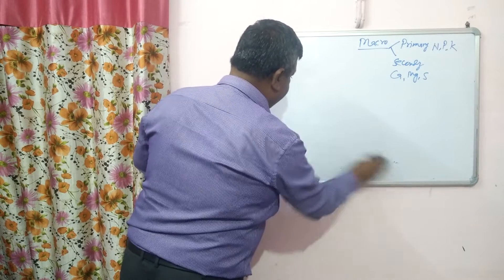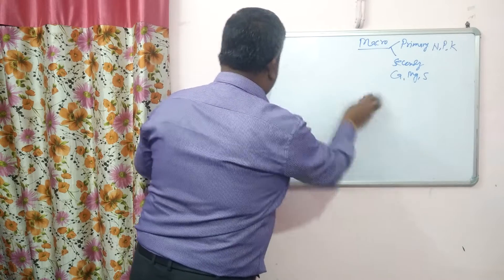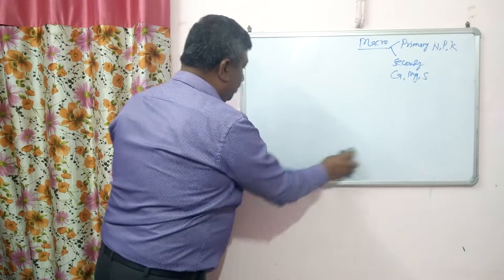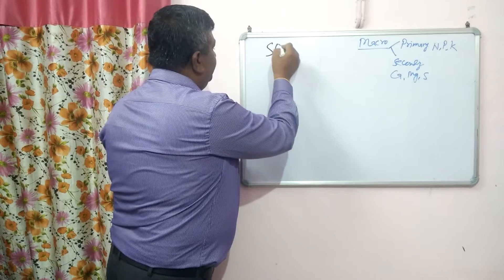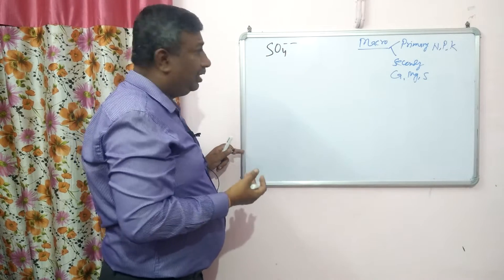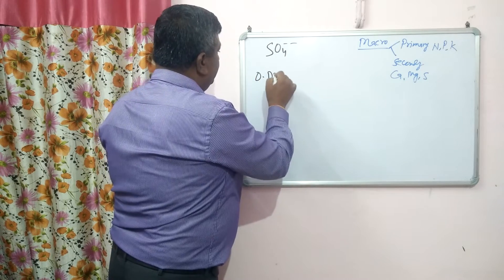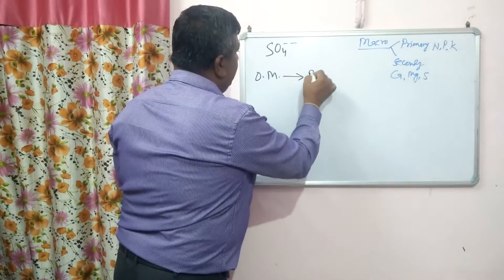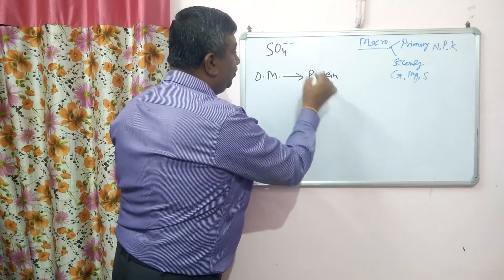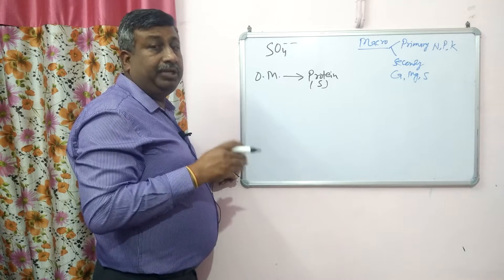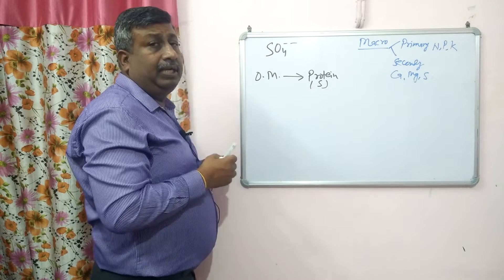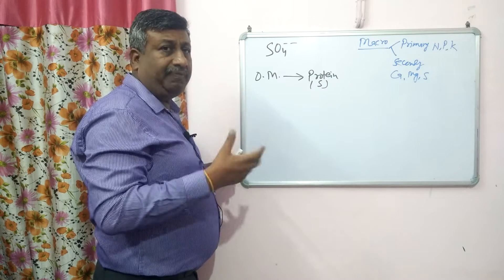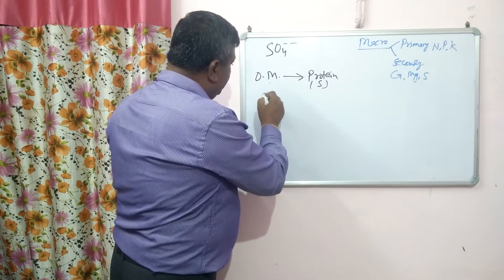In the case of sulfur, sulfur is available in the form of sulfate ion SO₄²⁻. Sulfate is an anion and this is the plant-available form. Sulfur is present in many forms in soil. Organic matter is the main source of sulfur. In plants, sulfur is present in amino acids like cysteine and methionine, so it is present in organic matter as protein — there are sulfur-containing proteins. Both nitrogen and sulfur are required for protein formation.